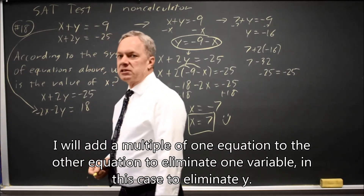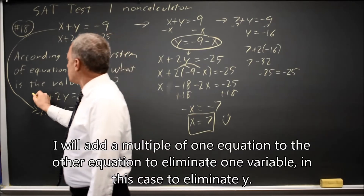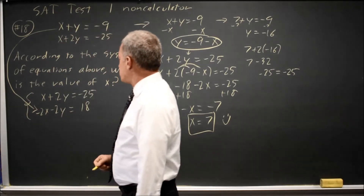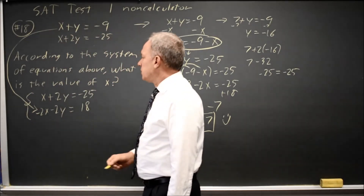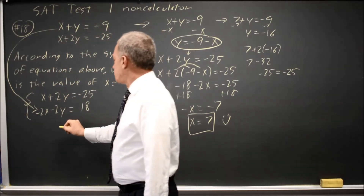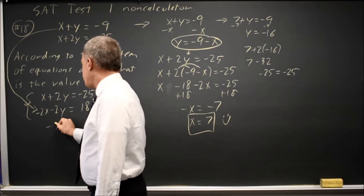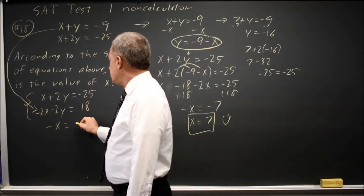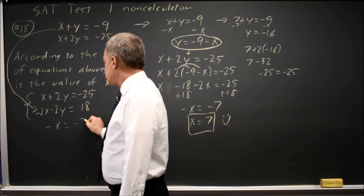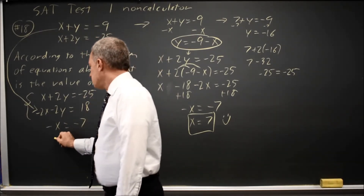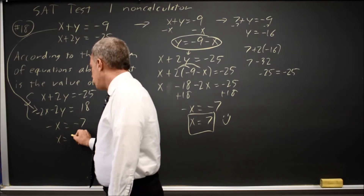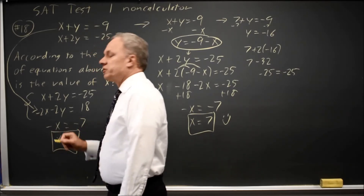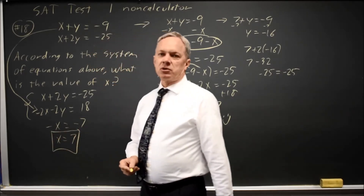You'll notice this is the same computation I had with substitution. x minus 2x is negative x. Negative 25 plus 18 is negative 7. So x equals positive 7, and we've already checked that that answer works.